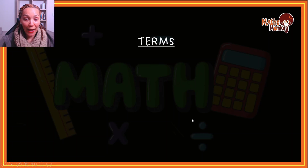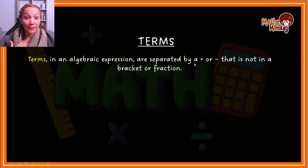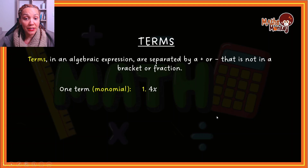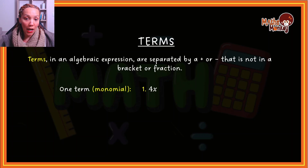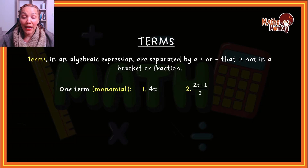Let's look at something that has only one term. A term in an algebraic expression is separated by a plus or minus that is not in a bracket or a fraction. One term is also called a monomial. If I have one term, look at this expression: this is 4x — there are no pluses or minuses in this expression, and 4x on its own is a term. There's also an example where you've got a fraction, but the plus is inside the fraction, so it's not separating anything, meaning this is also considered one term.